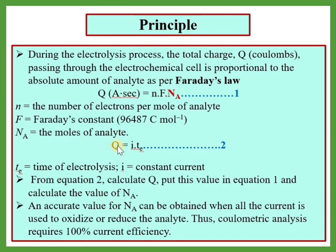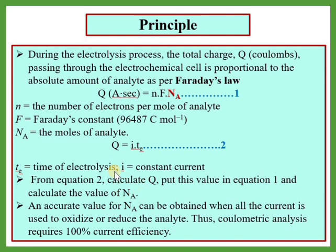We also know the relationship that charge Q equals I times T, where I is the constant current and T is the time of electrolysis. What we do is: from equation 2, we monitor how current changes as we apply potential. We take that current and the time of electrolysis, and from these we calculate the charge Q. Once we have Q, we can put the value in the equation and calculate N_A — the moles of that particular analyte, i.e., how much charge it required. So from charge we can derive the moles, meaning the amount of the analyte.